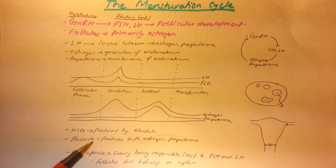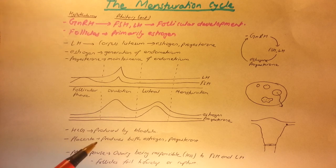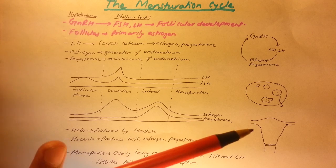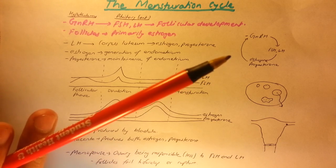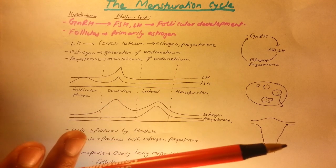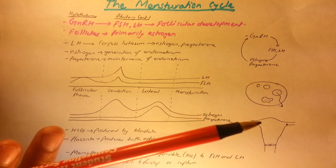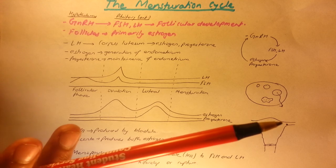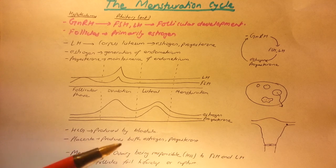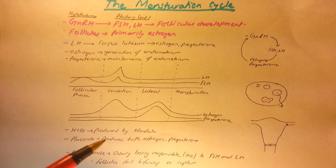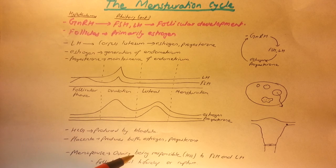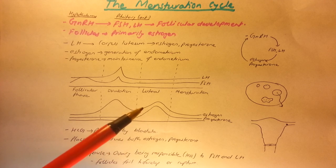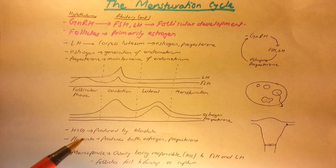After about the first trimester — the first three months of pregnancy — the placenta is well developed. The placenta is an organ that helps in exchange of gases and nutrients between the mother and the baby. The circulatory systems of the mother and baby are not continuous — the placenta serves as the connecting point. After the first trimester, the placenta produces both estrogen and progesterone, and HCG is no longer needed. HCG is the hormone used in pregnancy tests — if it's present in urine, the pregnancy test strip changes color to indicate pregnancy.